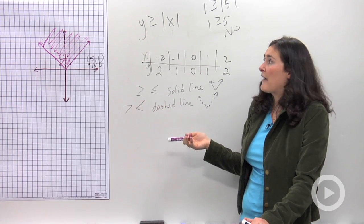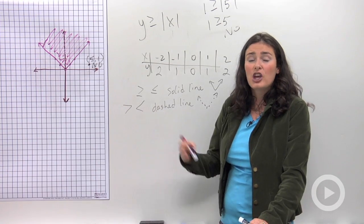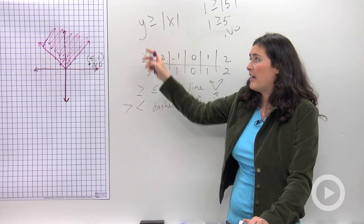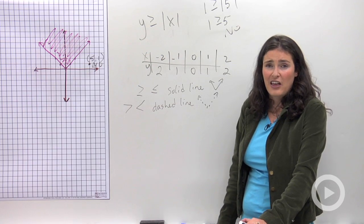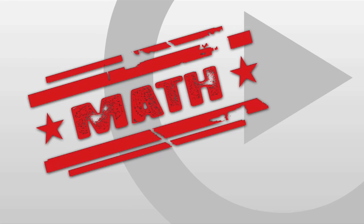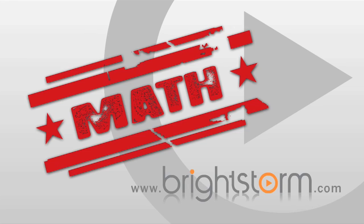And then the last thing you have to remember to do is the shading. You pick a point that's not on your v, plug in the x and y values, and find the area that has true statements. Find the yeses.